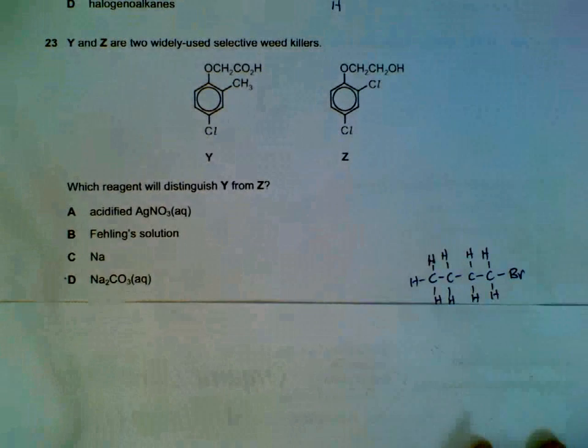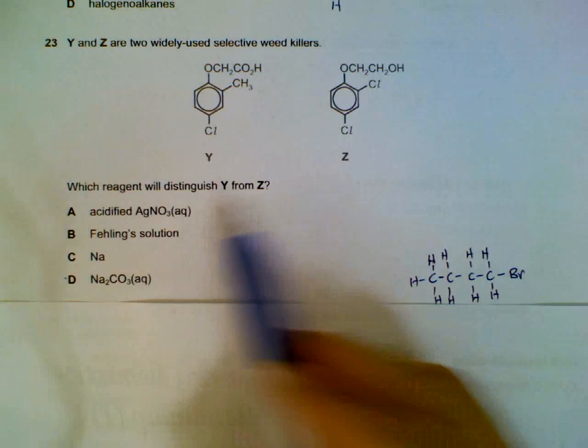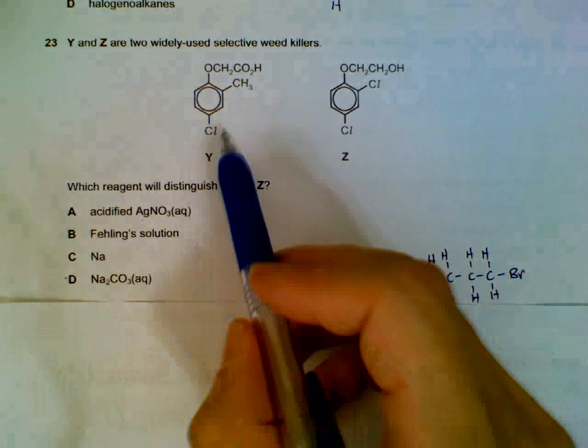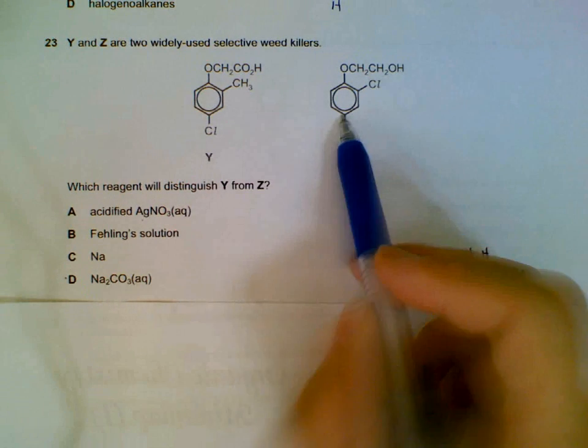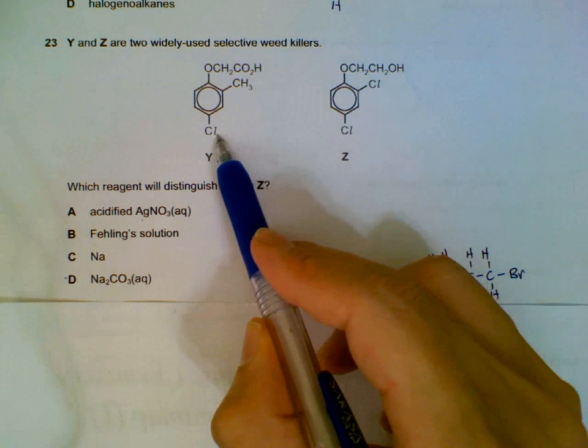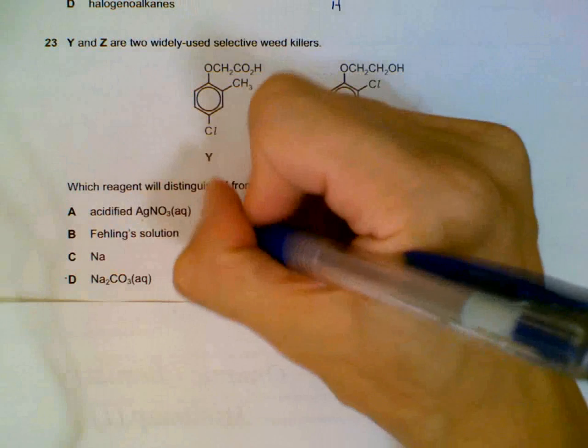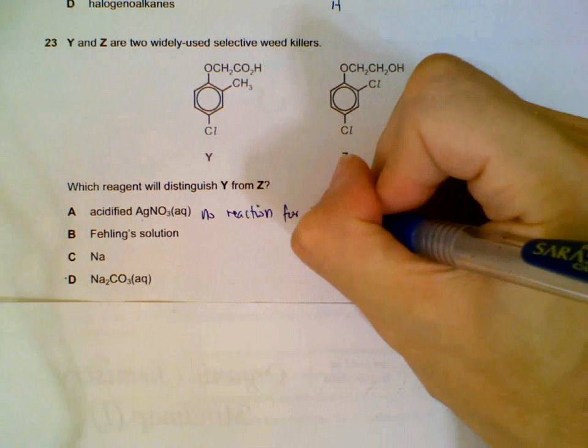Question 23. How do we distinguish Y from Z? That means we will have reactions that will show for one but not the other. Silver nitrate will not have a reaction with Y or Z. The chlorine here that's attached to the benzene ring will not be coming out to form a precipitate. They are very strongly bonded to the benzene. So no reaction for both.